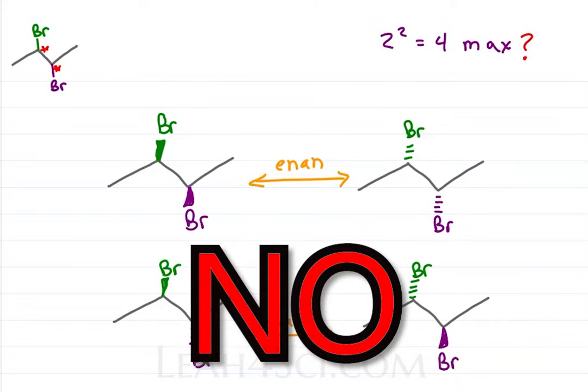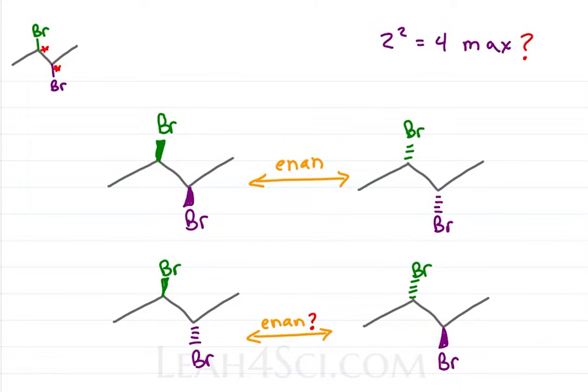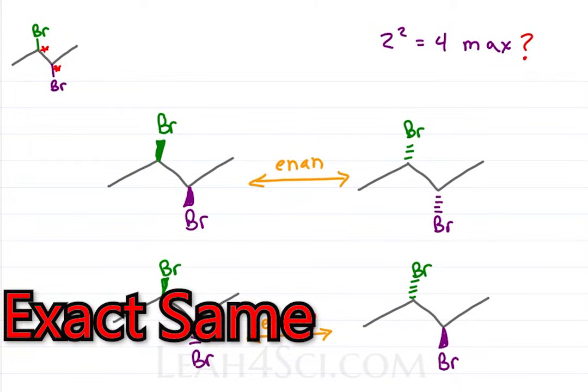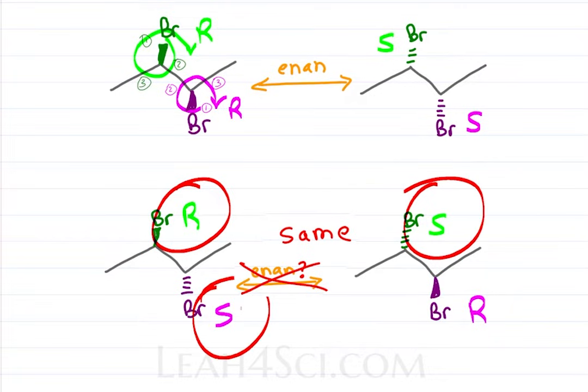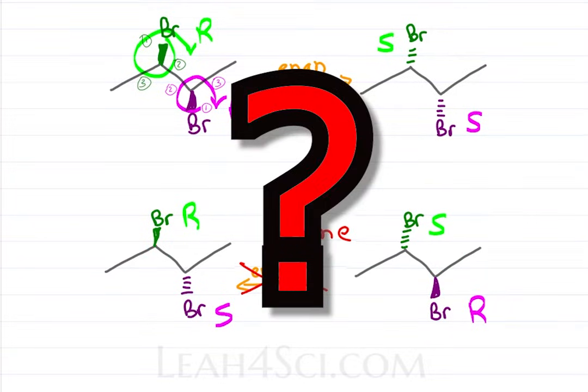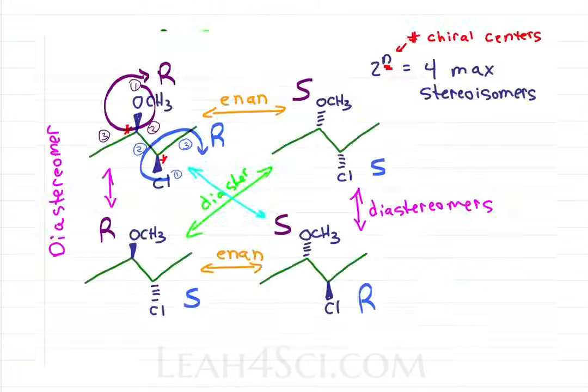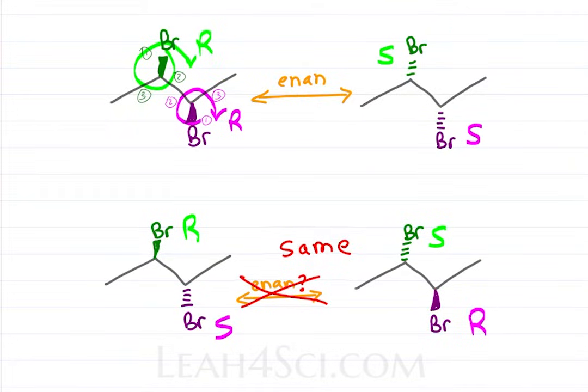Are they enantiomers? Actually no, these two are not enantiomers, it's the exact same molecule. The green bromine is R, the purple is also R. That makes their enantiomers S and S. And on the bottom we have the green R, green S, purple S, purple R. Once again if we have R and S, then S and R, how are they not enantiomers?